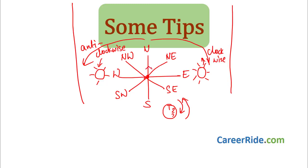Clockwise and anti-clockwise do not depend on which direction you are facing. If facing North and going clockwise, you go like this. If facing South and going clockwise, the clock moves the same way — same result. Clockwise means moving through the right. Anti-clockwise means moving through the left.